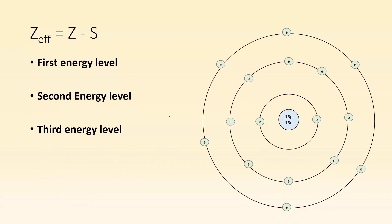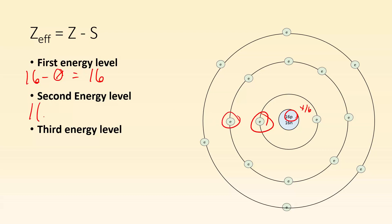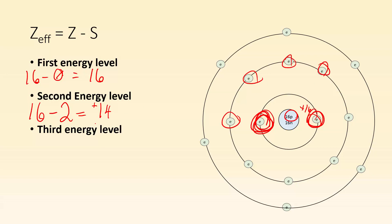Let's do some practice. First energy level: if I'm looking at this electron, there are 16 protons in the nucleus, so it's 16 minus 0 shielding electrons, which gives 16. Second energy level: same nucleus, so 16 minus — how many shielding electrons? There are two. So the effective nuclear charge is positive 14. The electrons in the second ring are going to feel as if they're experiencing a plus 14 nuclear charge.